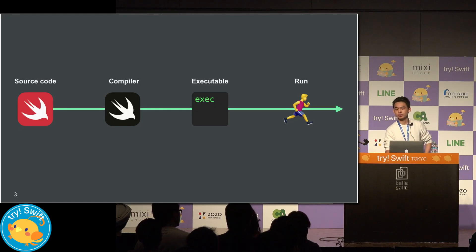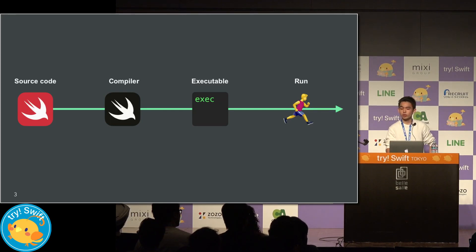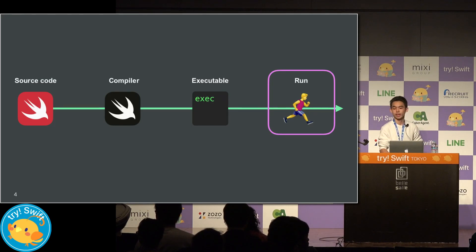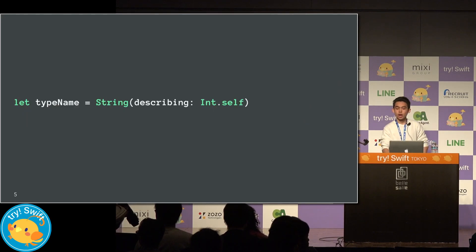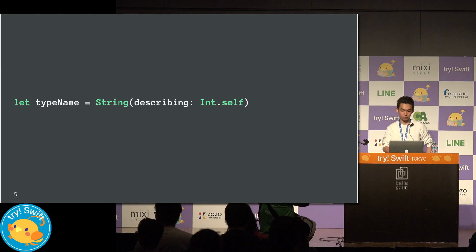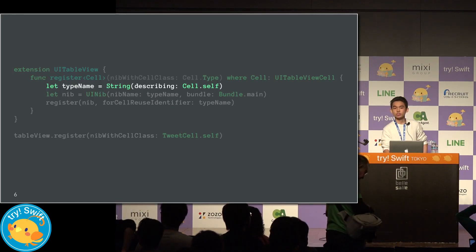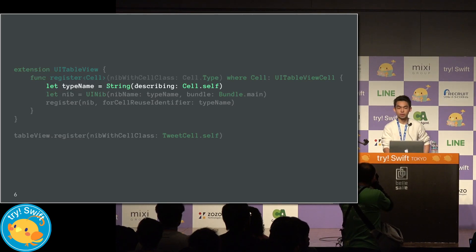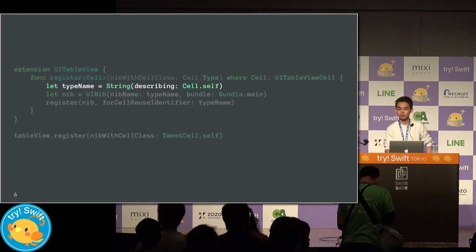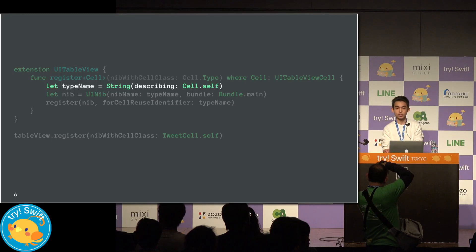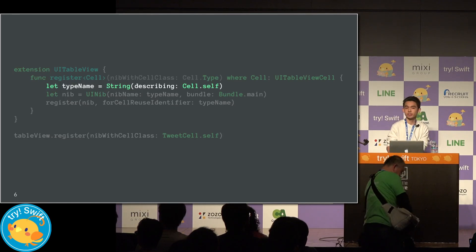Today, I'll talk about metadata, which is one of the most important things to understand how Swift works. Swift is well known for being a statically typed language, but it actually has many dynamic things at runtime. I'm sure all of you have looked at Stack Overflow and written code like this to get a type name. For example, when you call the register method for UITableViewCell, you use this to match the XIB name and type name. It's a useful extension, but have you ever thought about how this code works at runtime? This is your first step towards thinking about memory representation in Swift. Let's dig into the world of metadata.